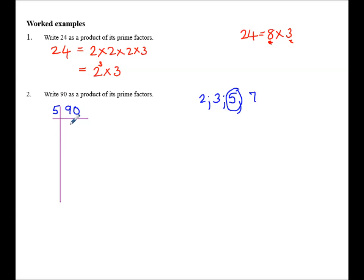I'm going to take 5 because 90 ends in a 0, so I know that 5 will go into 90. So 5 goes into 9 once, remainder 4. 5 goes into 40, 8 times. What prime number will divide exactly into 18? Well, I could take 3 or 2. So 3 into 18 goes 6.